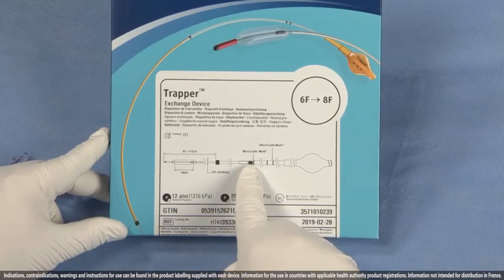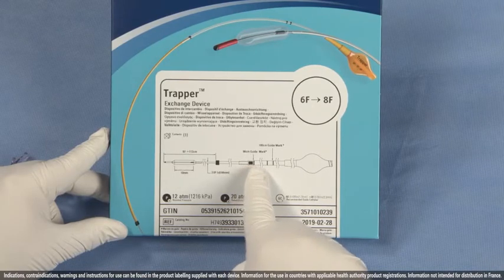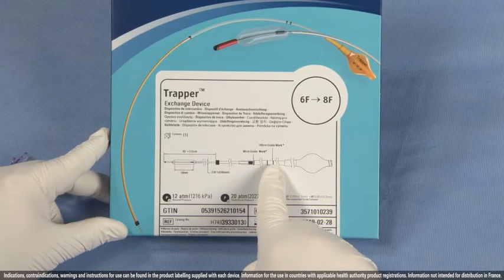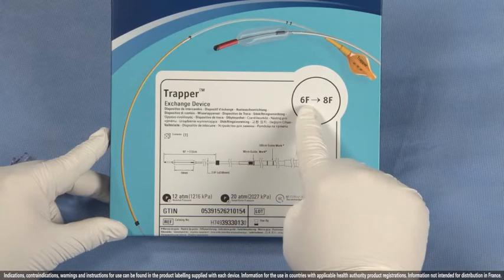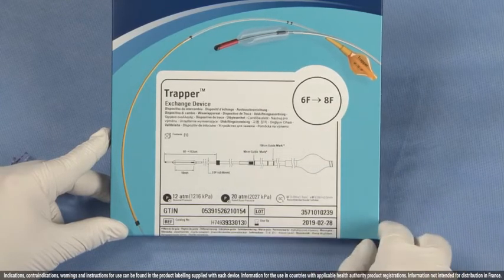It shows you that there's a single black line for the 90 centimeter mark, and a double black line for the 100 centimeter mark. Trapper can be used in a 6, 7, or an 8 French guide.